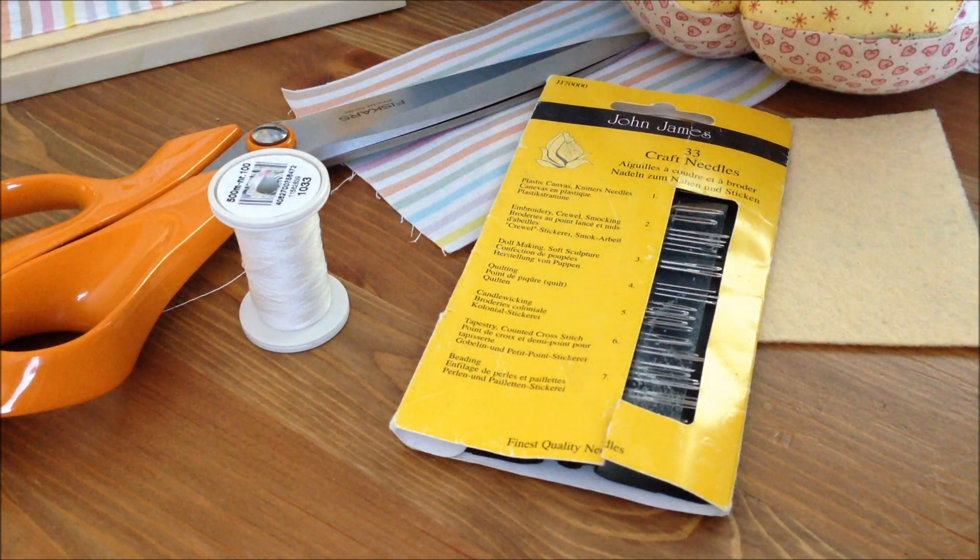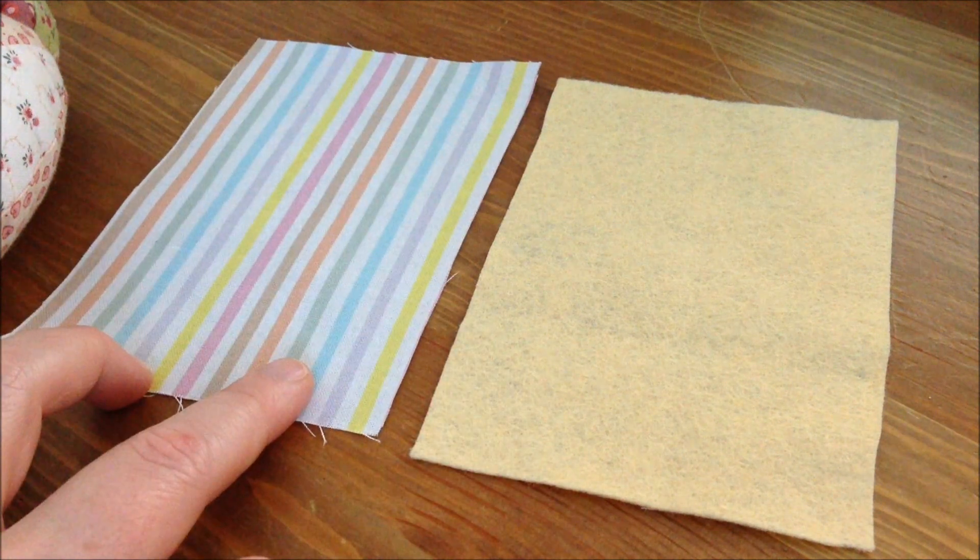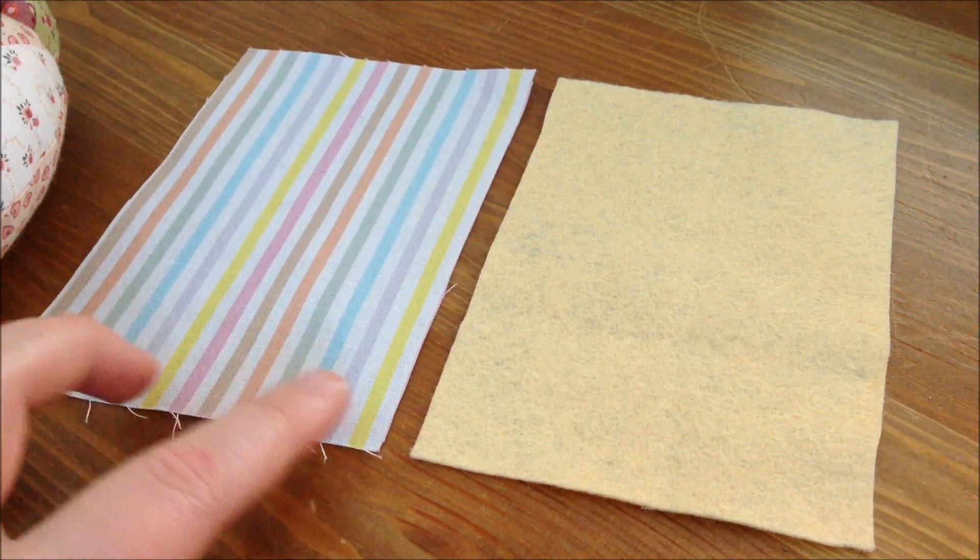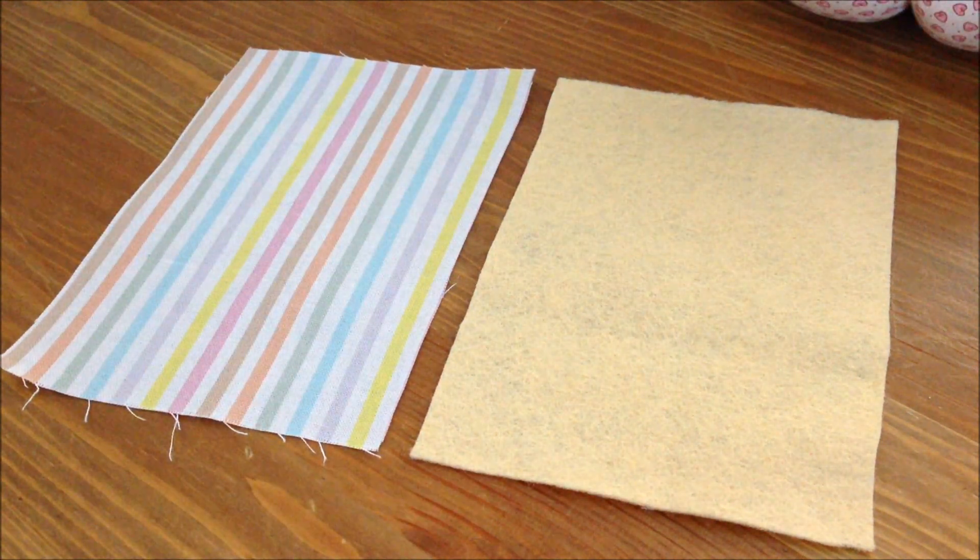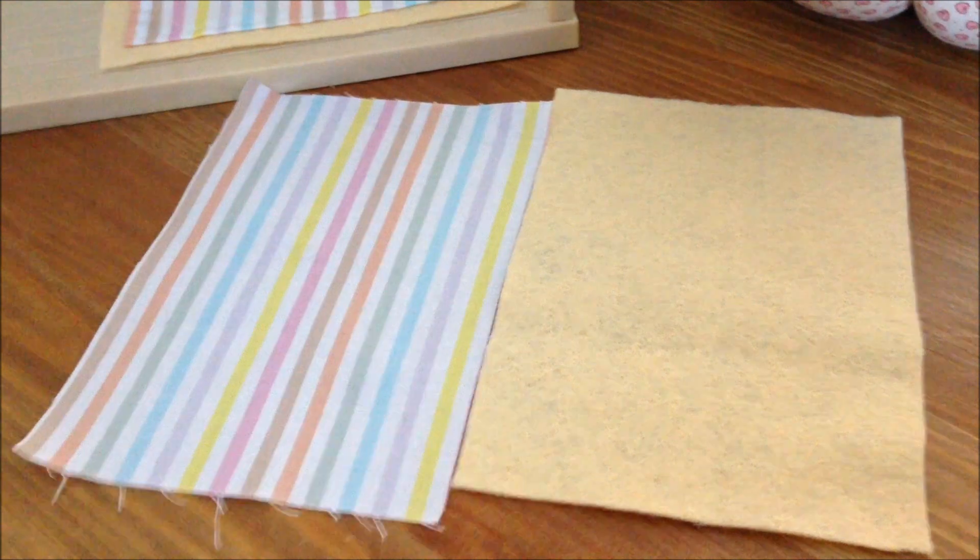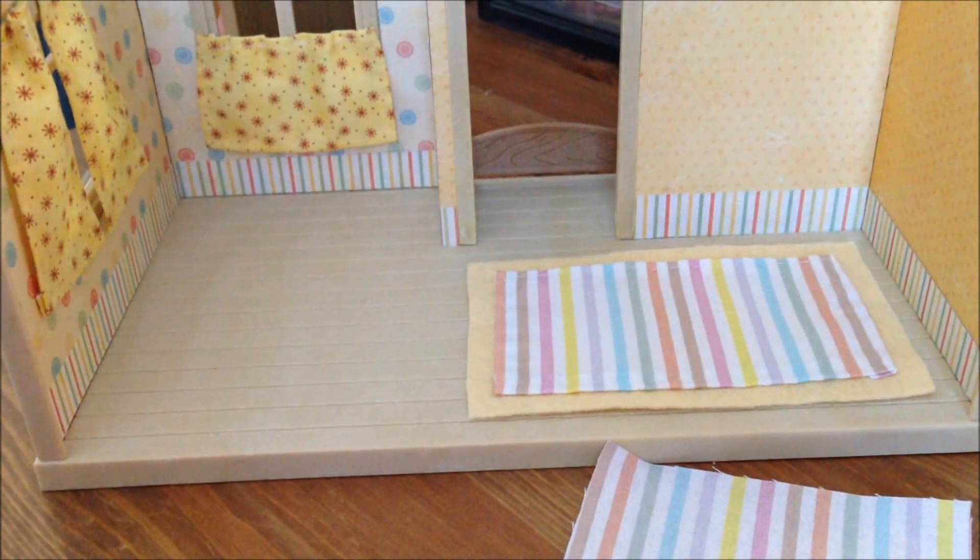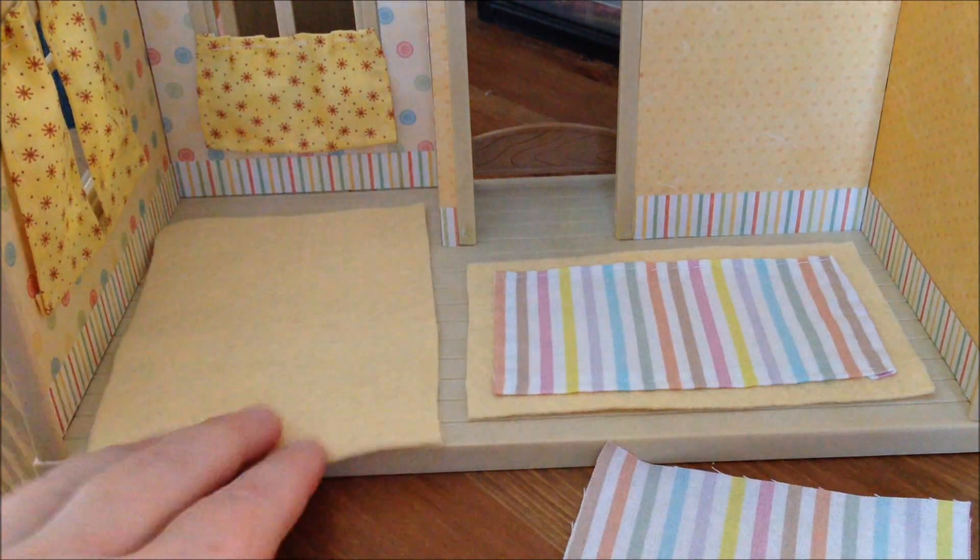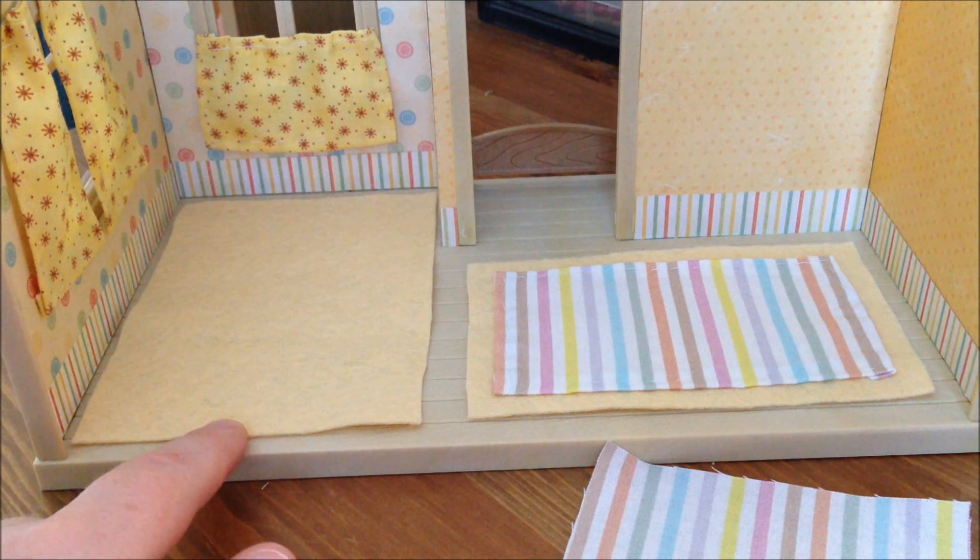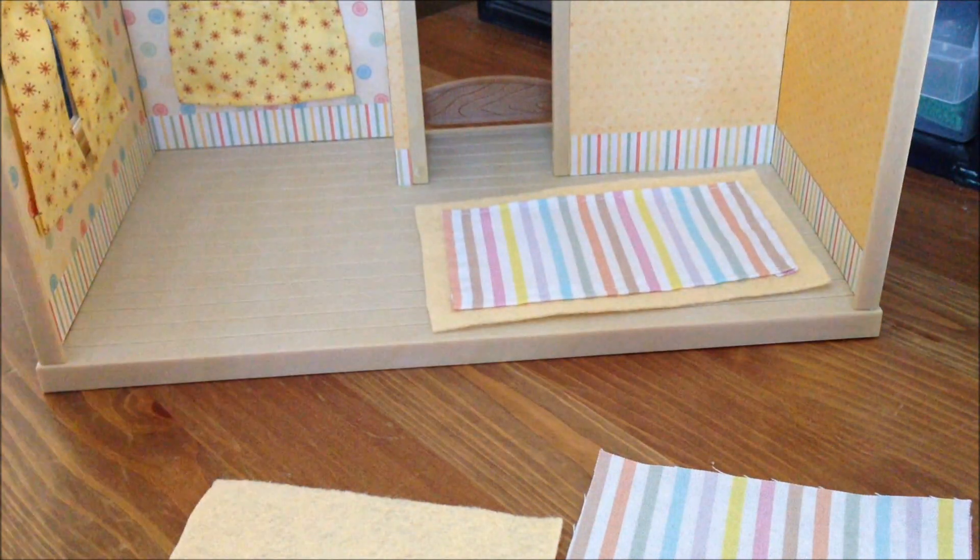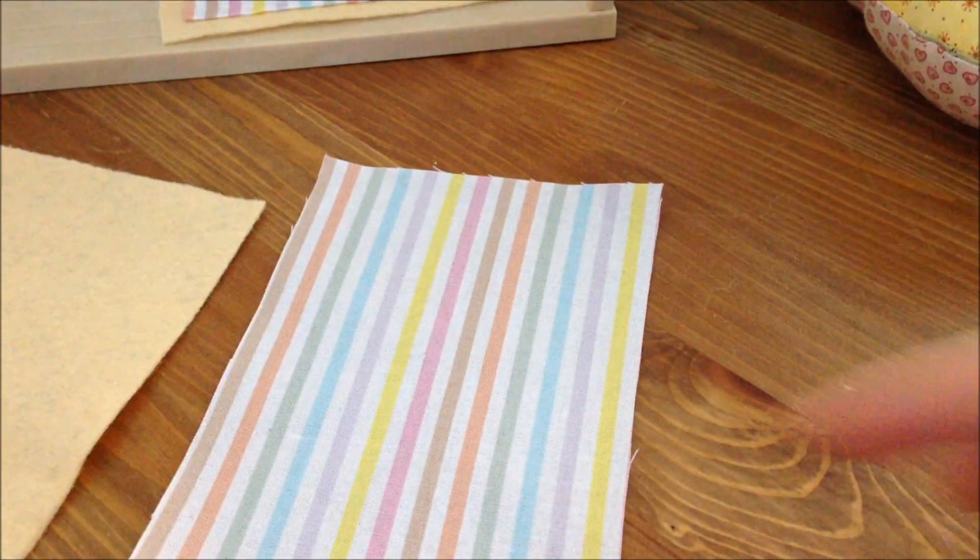So let's get started making our rug. First cut your felt and your fabric to be the same size. Measure how big you want them to be for your space. So here is my room. And I've cut this to fit pretty snugly in here. So this is a good size for me. And I have cut this cotton fabric to be the same size. Now this is going to change.